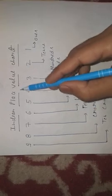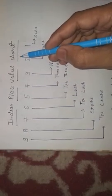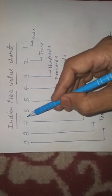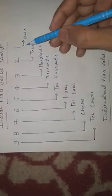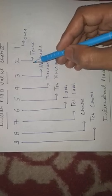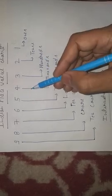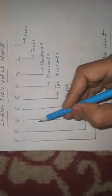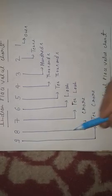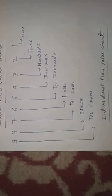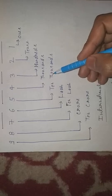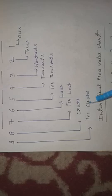The first is the Indian place value chart. I take a number with digits 1 to 9. The first digit is ones, second is tens, third is hundreds, fourth is thousands, fifth is 10,000, sixth is lakhs, seventh is 10 lakhs, eighth is crore and ninth is 10 crore. So in the Indian place value chart, numbers start from ones, tens, hundreds, thousands, 10,000, lakhs, 10 lakhs, crore and 10 crore.